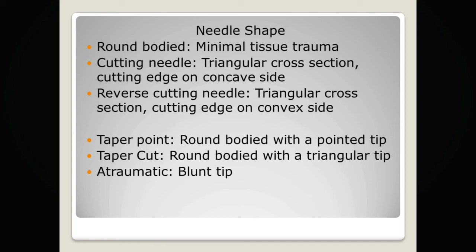There is also a reverse cutting needle, which again employs a triangular cross-section but has a cutting edge on the convex side. As well as considering the cross-section of the body, it is important to consider the tip of the needle. You can have a taper point needle — a round-bodied needle with a pointed tip — or a taper cut needle with a triangular tip. When closing things like the rectus sheath, you may want to use a blunt tip needle, which is atraumatic and safer than a sharp needle.